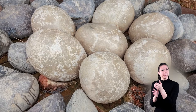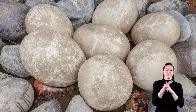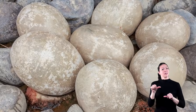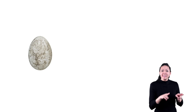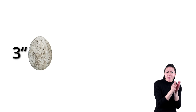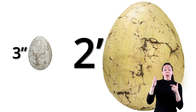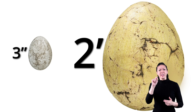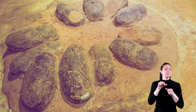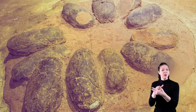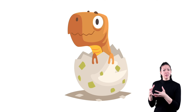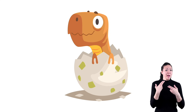Yet another type of trace fossil that has been found by scientists are preserved animal eggs. Some eggs that have been found are as small as 3 inches and others are as big as almost 2 feet. These eggs are useful for paleontologists to help them determine what kind of animal they came from, and even what something like a baby dinosaur might have looked like.